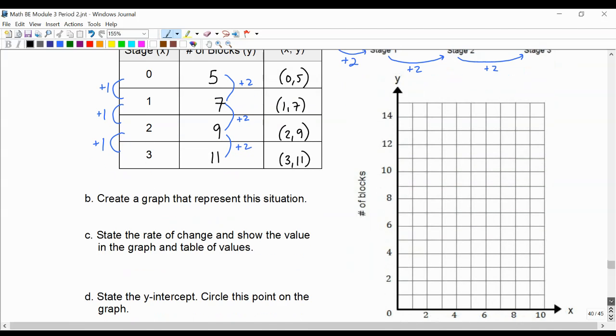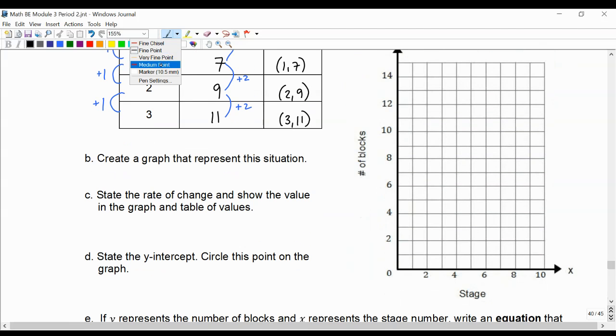We're going to make our graph. Our graph starts at (0, 5), and it's (1, 7), (2, 9), (3, 11).